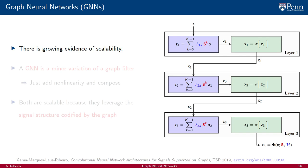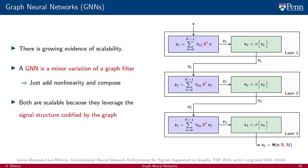Although the matter is not as settled as in the case of CNNs, there is growing evidence for the scalability of GNNs. Empirical evidence aside, the reason why GNNs are promising is because they are minor variations of graph filters, in the exact same sense in which convolutional neural networks are minor variations of convolutional filters — we just add graph nonlinearities and layer compositions. As we will explore in this course, both graph convolutional filters and graph neural networks are expected to scale because they leverage the signal structure codified by the underlying graph.